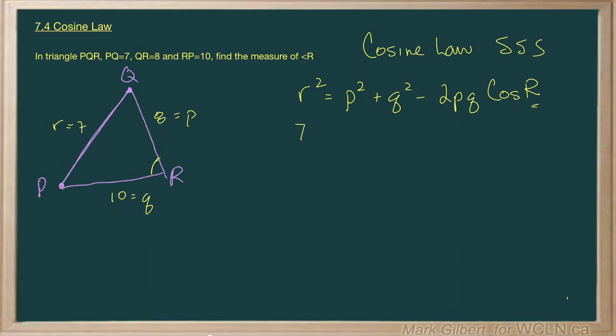So let's plug in what we got. We got 7 squared is equal to 8 squared plus 10 squared minus 2 times 8 times 10 times the cosine of R.